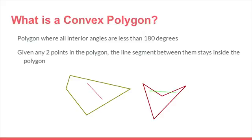You can see that the figure on the left is convex, because for any two points the segment will stay inside, while the figure on the right is not convex. We call this concave, as we do have a segment that falls outside the polygon.